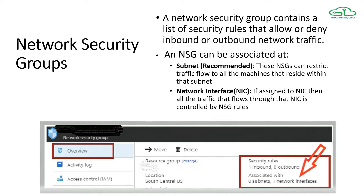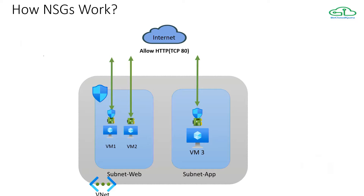From your portal you can find out whether your network security group is associated with subnets or network interfaces. Let's see how an NSG works. We have a VNet with two subnets - a web subnet and an app subnet. Looking at VM3 in the app subnet, there's a rule allowing HTTP TCP at port 80, and we have an NSG at the NIC level. Whatever traffic flows through that NIC would be based on that rule. If traffic goes to port 80 it would be allowed, otherwise denied.